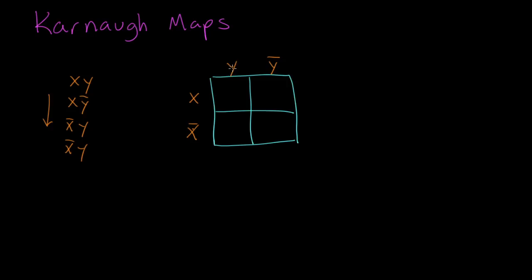This top left hand cell is the intersection between x and y. If you recall, in Boolean algebra multiplication is kind of like AND and it also means intersection. Likewise, addition kind of means OR and it's kind of like union. The top right cell is the intersection between x and not y. The bottom left is not x, y and the bottom right is not x, not y.